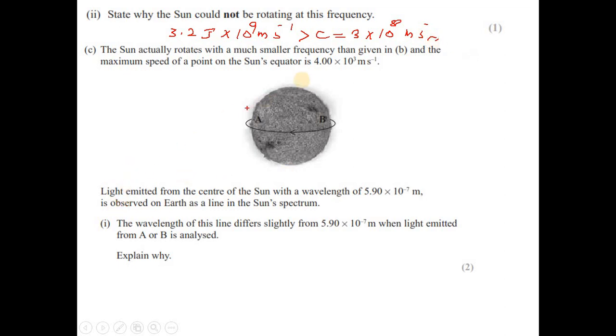The sun actually rotates with a much smaller frequency given in b. And the maximum speed of the point on the sun's equator is 4 into 10 to the power 3. Light emitted from the center of the sun with wavelength 5.9 into 10 to the power minus 7 meter is observed on the earth as a line in the sun's spectrum. The wavelength of this line differs slightly from 5.9 into 10 to the power minus 7 when light emitted from a or b is analyzed. Explain why. Now if you see that in the diagram the sun is rotating in that way. That means the point b seems to come closer and a will be moving away. So we have a blue shift here and we would have a red shift here. That's why due to Doppler shift we can have a small difference in the light received from a and b.